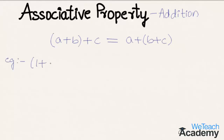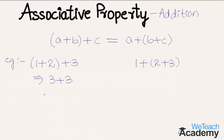Here we have (one plus two) plus three. If we change the grouping we get one plus (two plus three). On the left hand side, one plus two is three, and three plus three equals six. On the right hand side, two plus three is five, and one plus five is also equal to six. So if we change the grouping we get the same result.